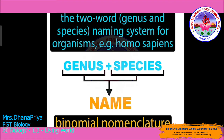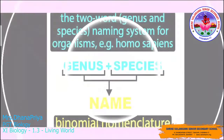For example, the name Homo sapiens uses 'Homo' as the genus and 'sapiens' as the species. Binomial nomenclature was introduced by Carolus Linnaeus, the father of taxonomy. He established the practice of binomial nomenclature — the denomination of each kind of plant by two words: genus and species.